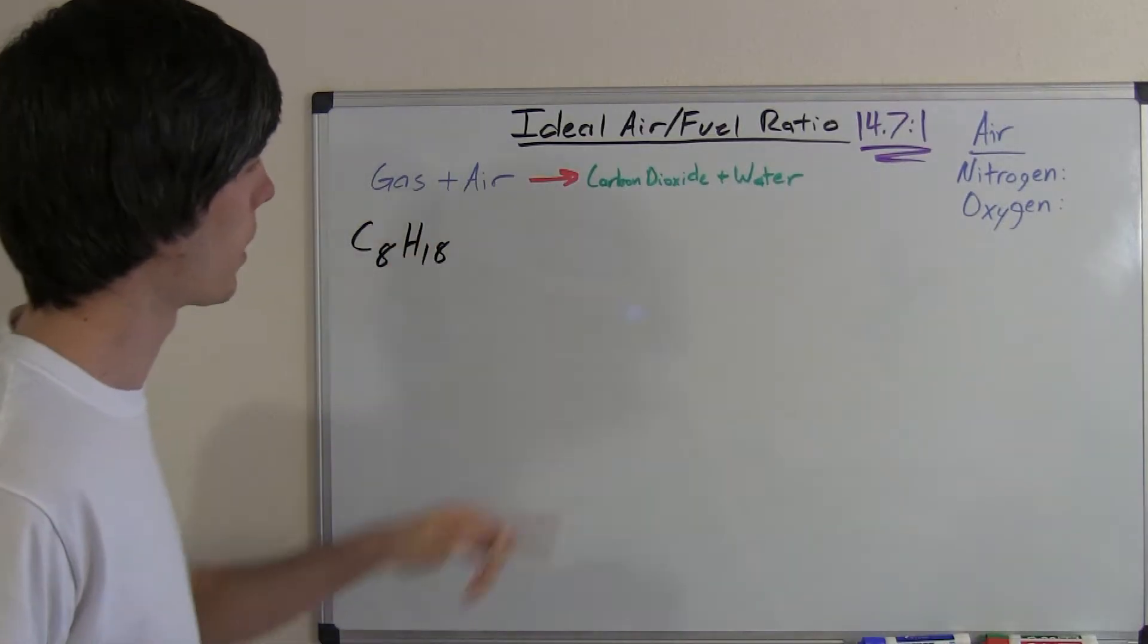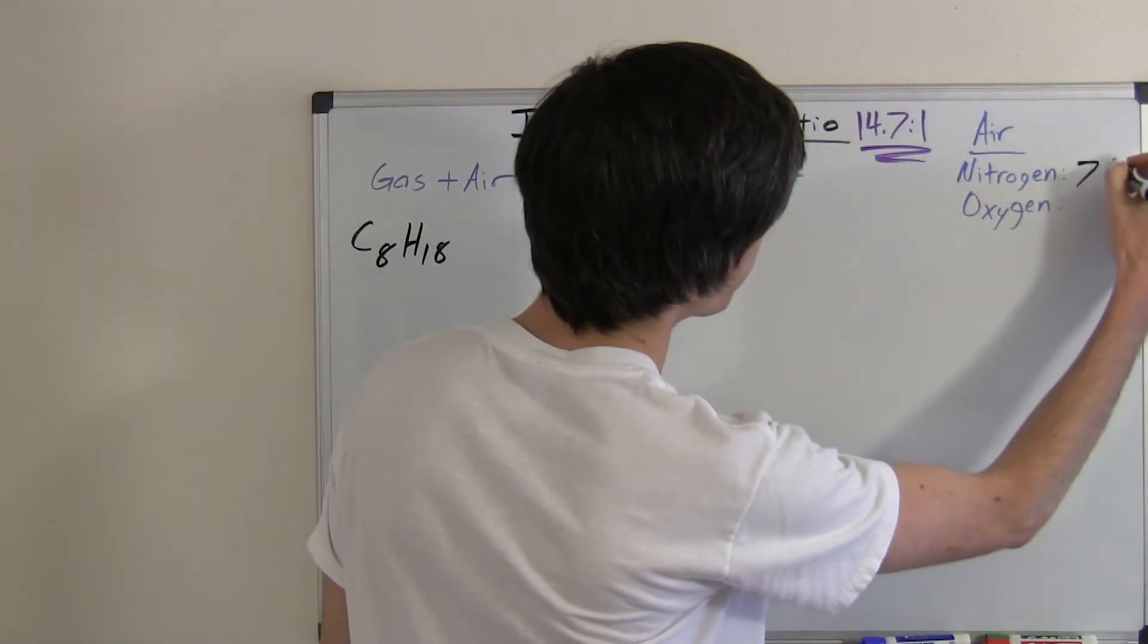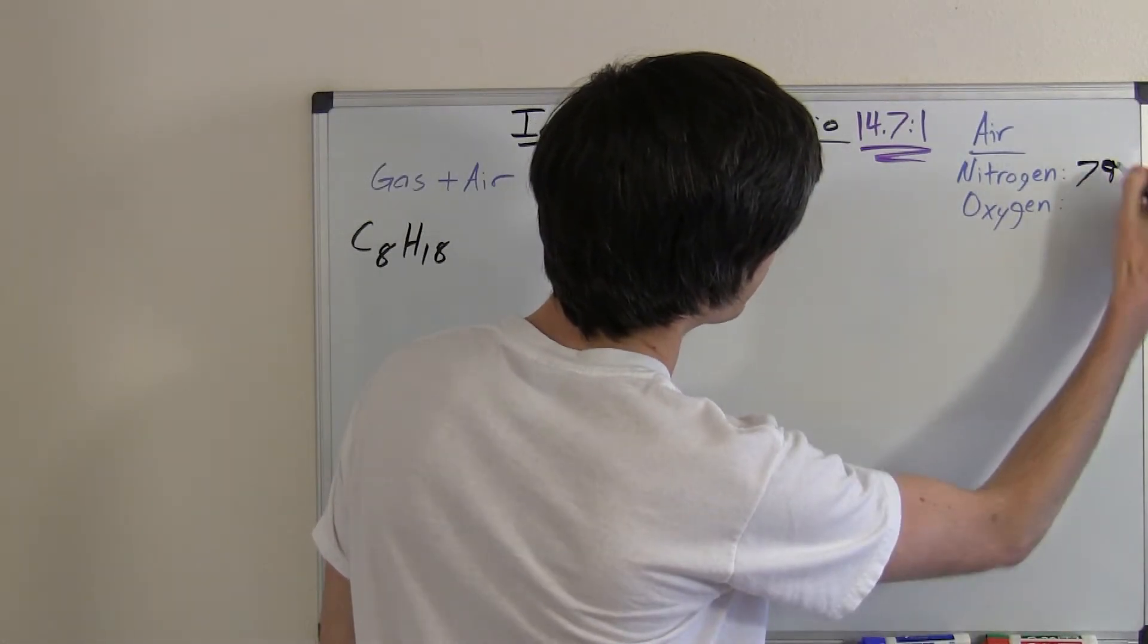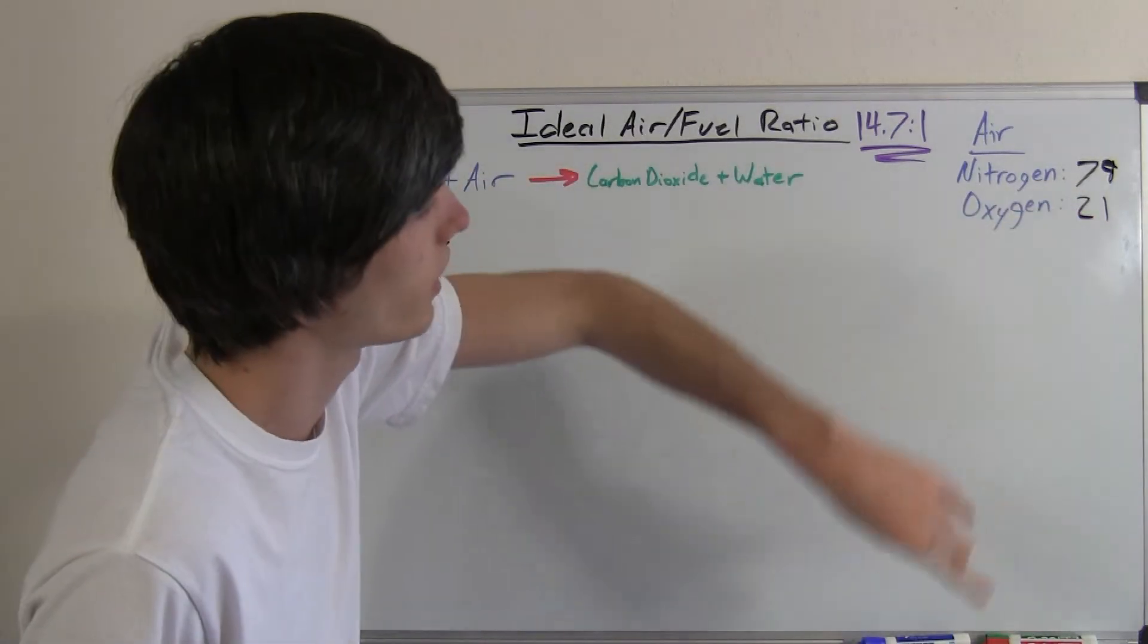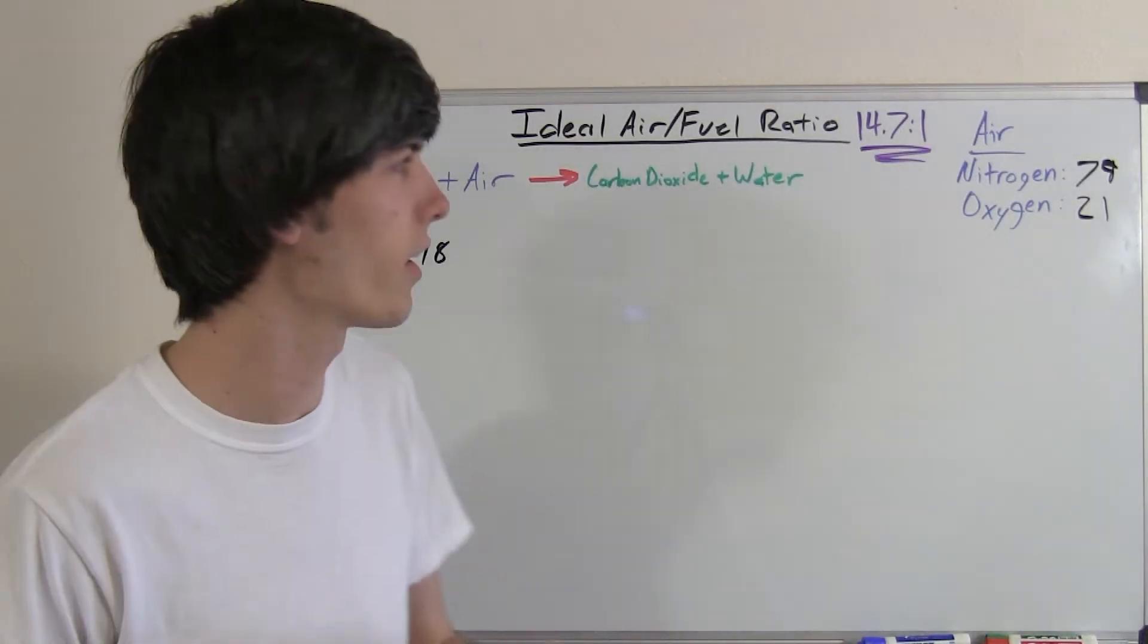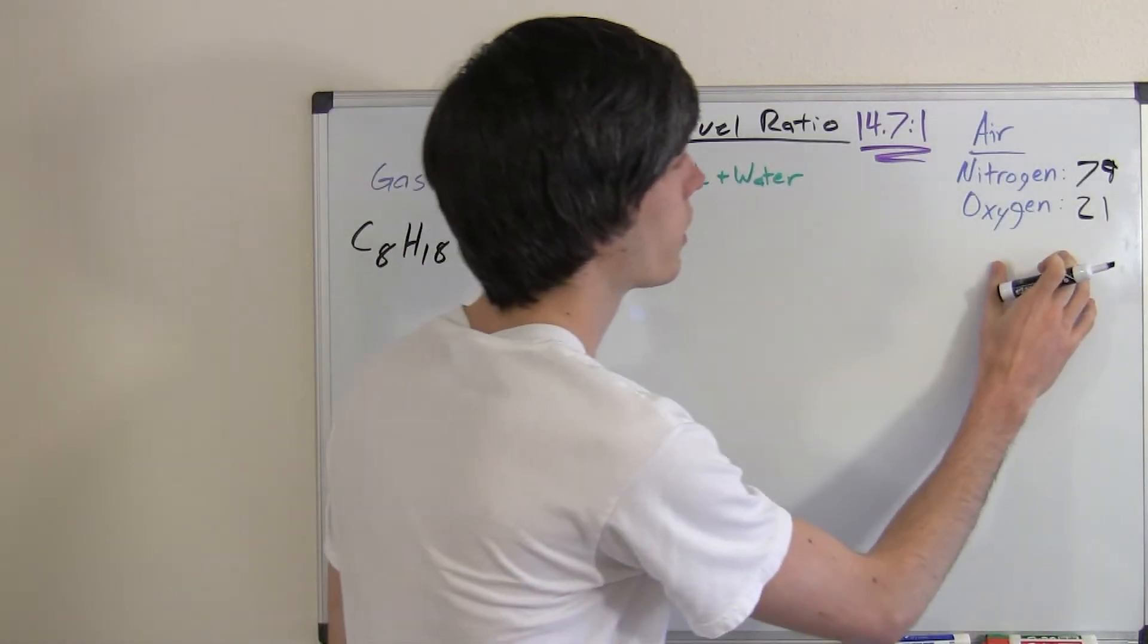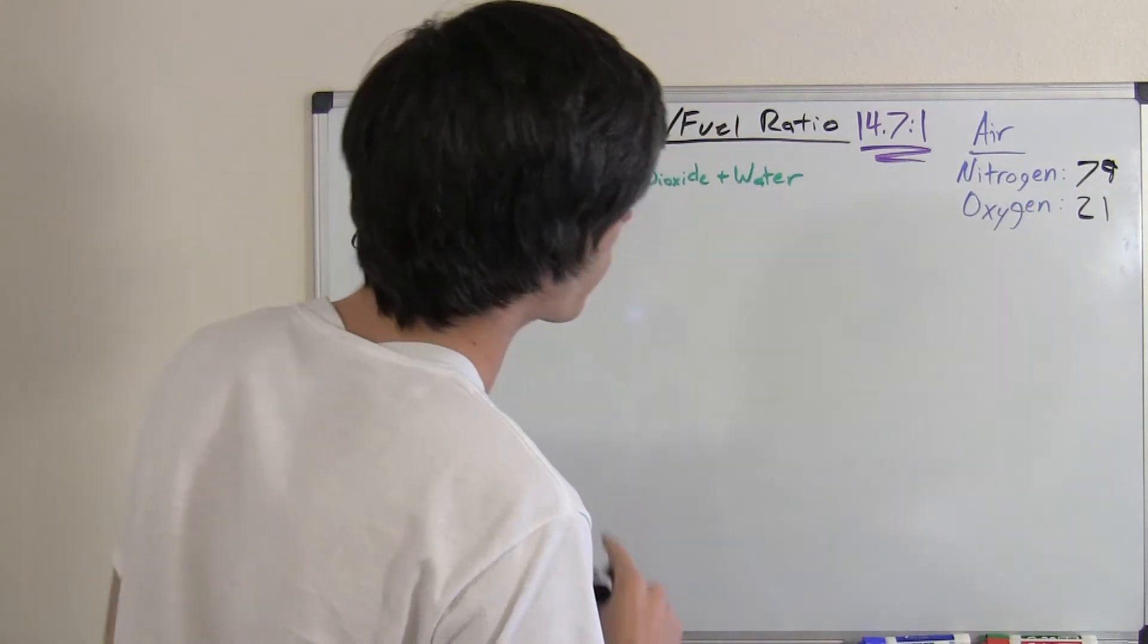Air is primarily nitrogen and oxygen. So for the purposes of this video we're just going to say that air is 79% nitrogen and 21% oxygen. Now I know it's more like 78, 21 and then 1% argon and 0.03% carbon dioxide. But for this video for simplicity we're just going to do 79% nitrogen 21% oxygen.